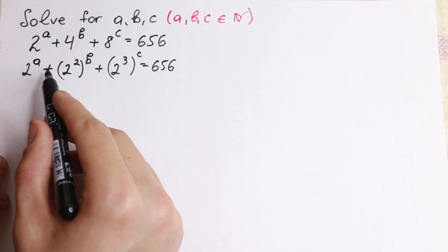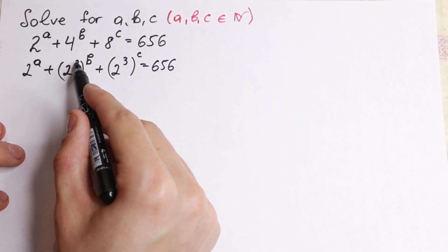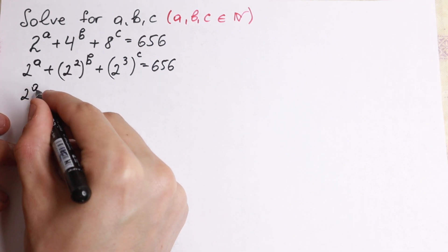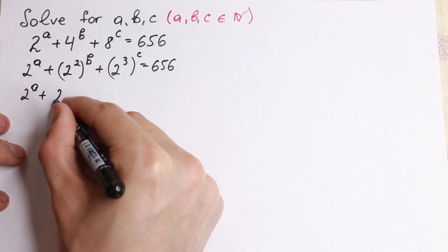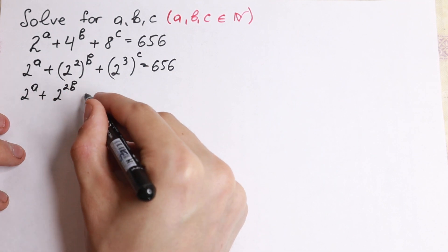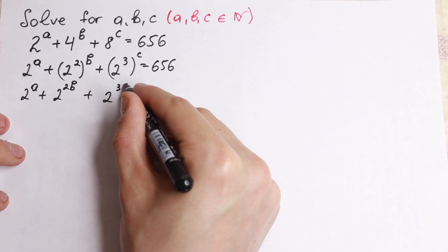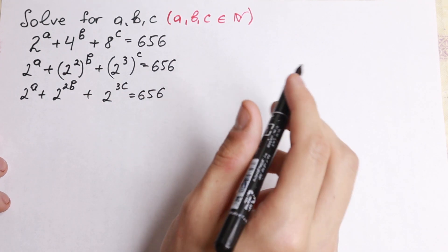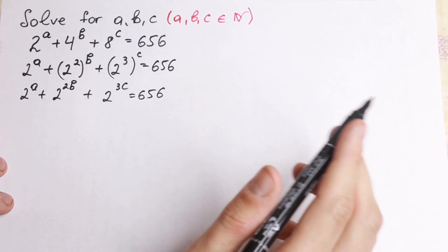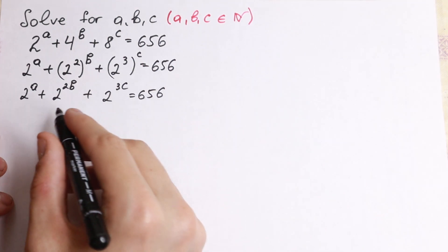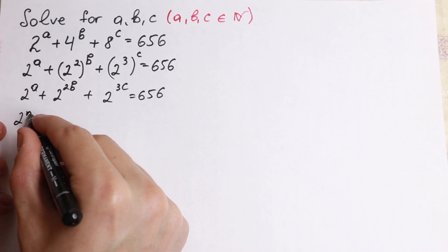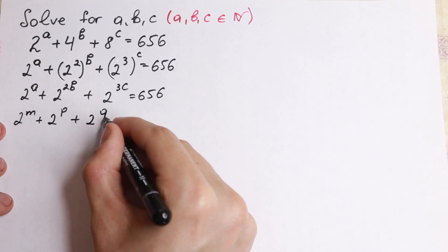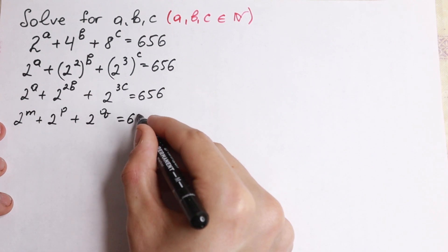Moreover, we can use our exponent rule: if we have a power to a power with parentheses, we multiply the exponents. So as a result we have 2 to the a, plus 2 to the power 2b, plus 2 to the power 3c, equal to 656. Now I suggest using a substitution: let 2^m + 2^p + 2^q = 656.